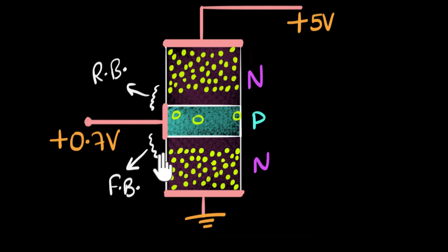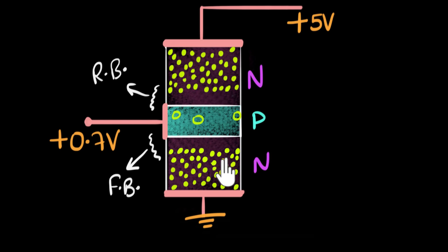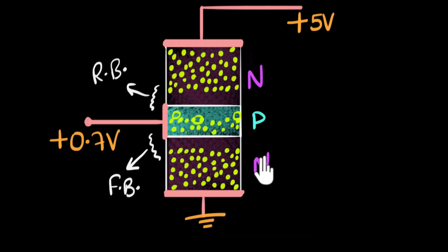But this junction is forward biased. Under forward bias, the majority charge carriers can flow across and diffuse into each other. For silicon, at 0.7 volt the depletion region vanishes, and as a result these electrons and holes can now easily diffuse into each other. So these electrons will start diffusing into the P region. I'm going to neglect the holes because they're very tiny in number.